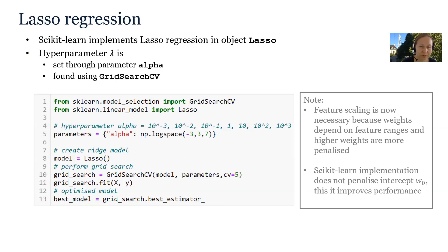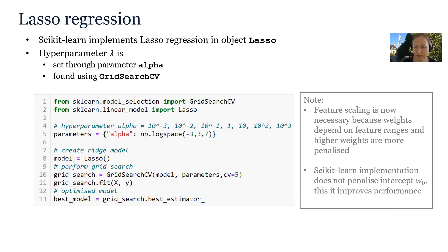Scikit-learn implements LASSO regression in the object Lasso, and the hyperparameter lambda is again set through parameter alpha and found using GridSearchCV. The code is very similar to the code for tuning ridge regression, except that we import and create the model Lasso. Again, feature scaling is necessary and we don't penalize the intercept.